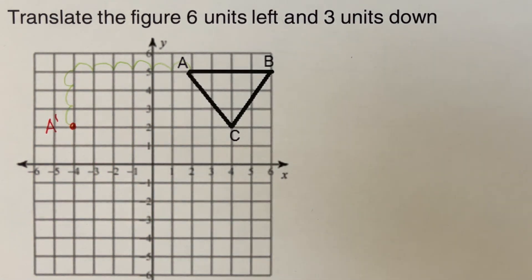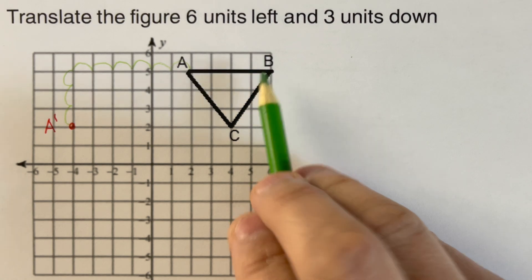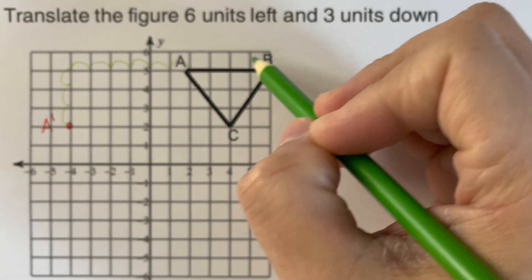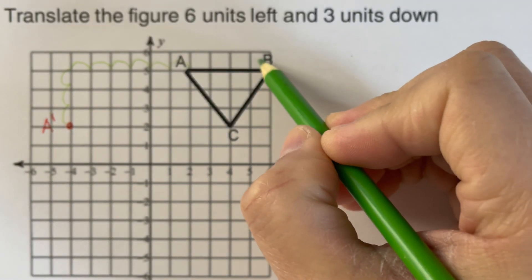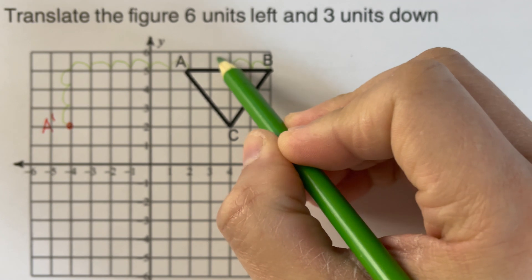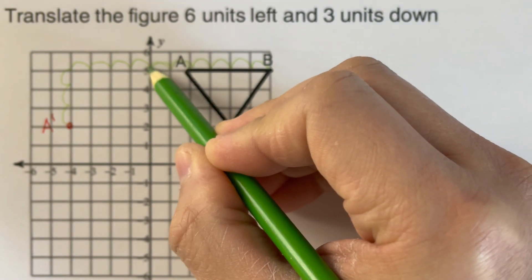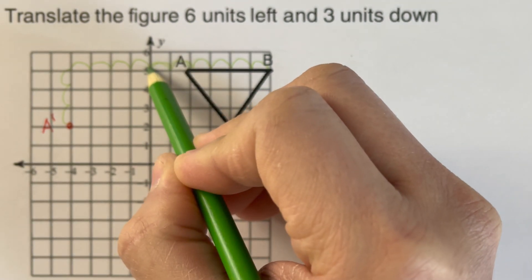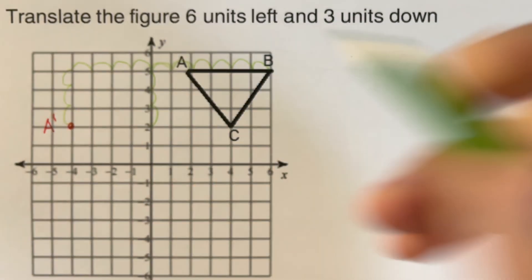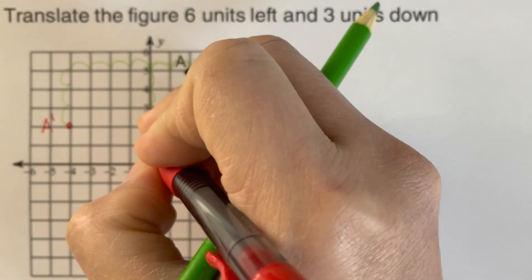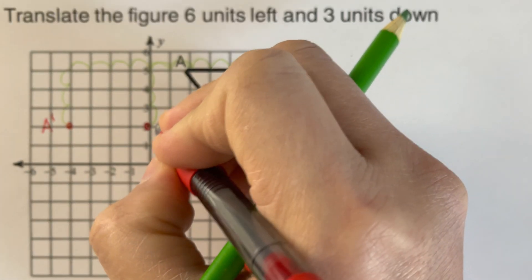Now we do the same thing for B to get B prime. So that would be six left: one, two, three, four, five, six — and three down: one, two, three. So this is where our B prime is going to sit.